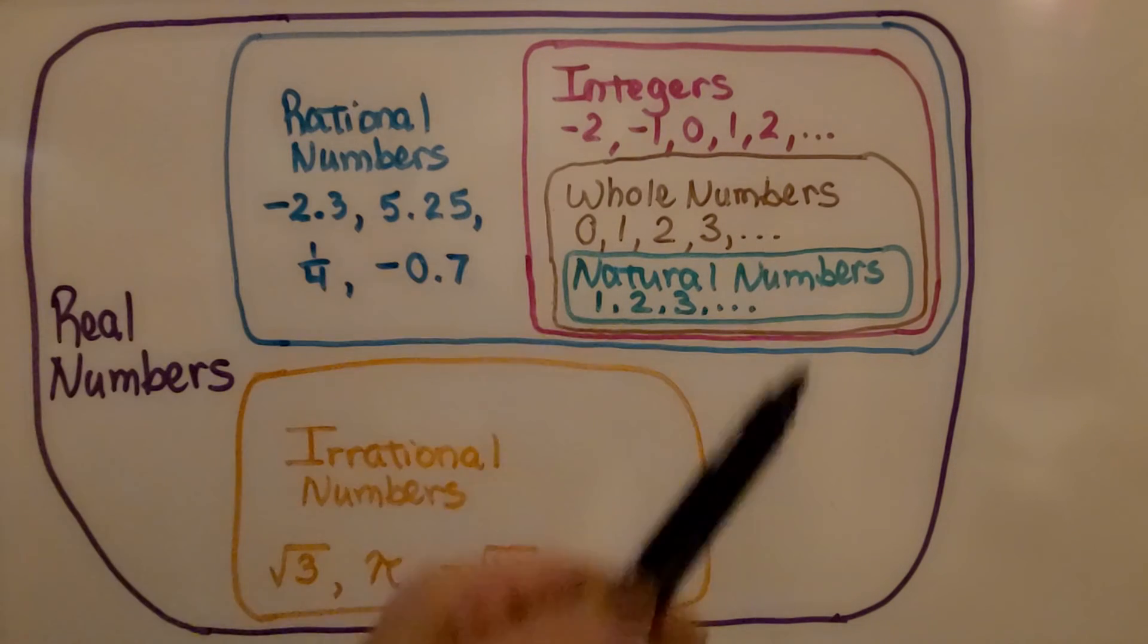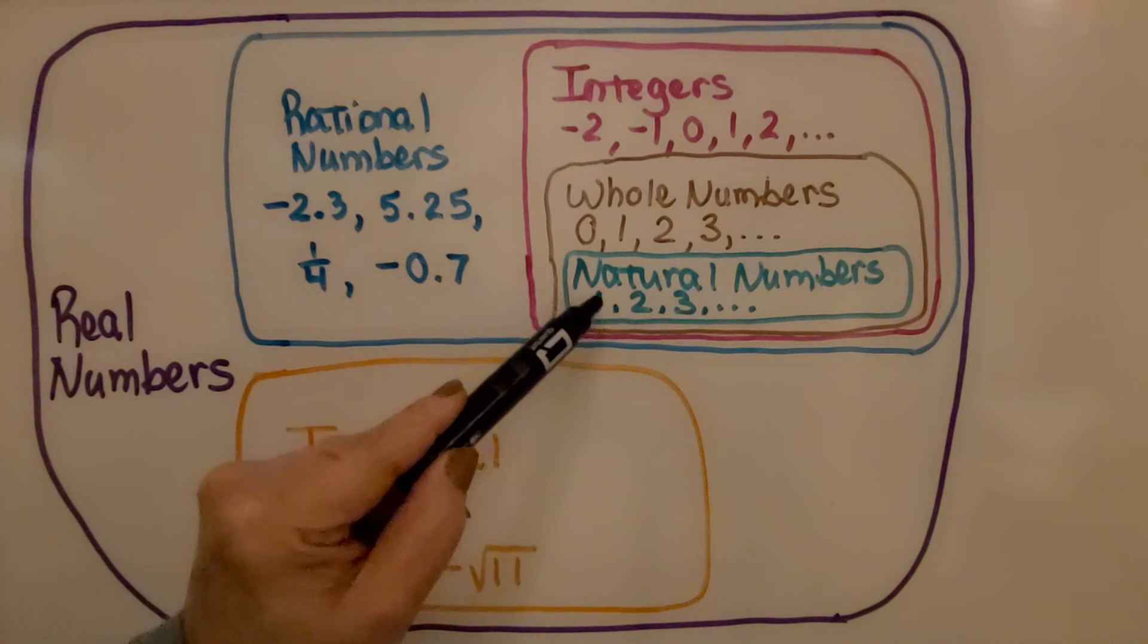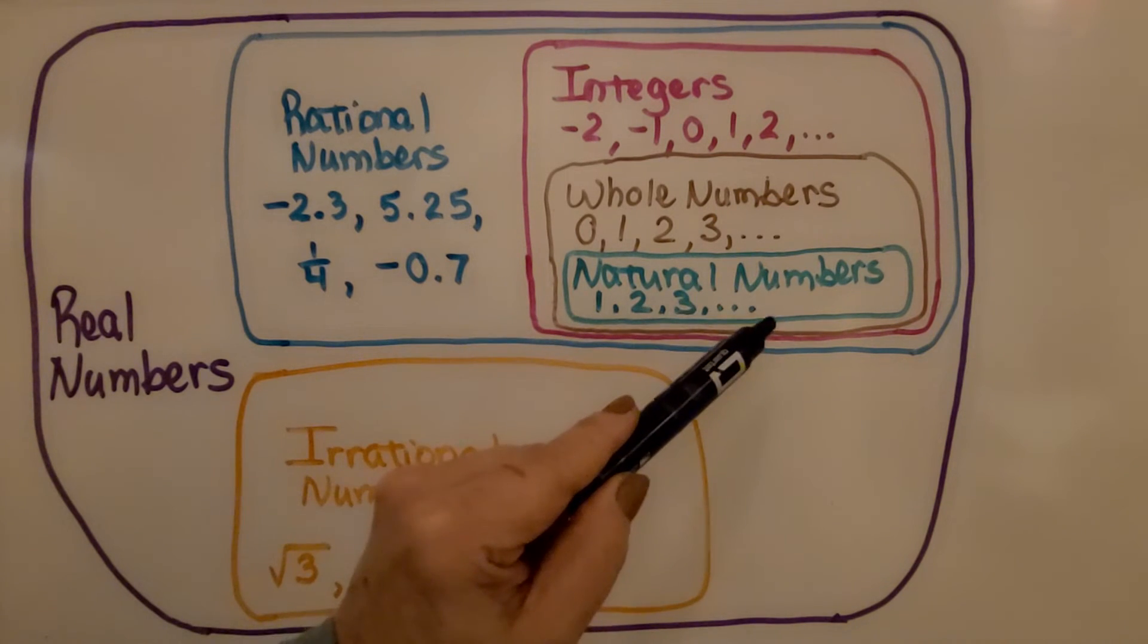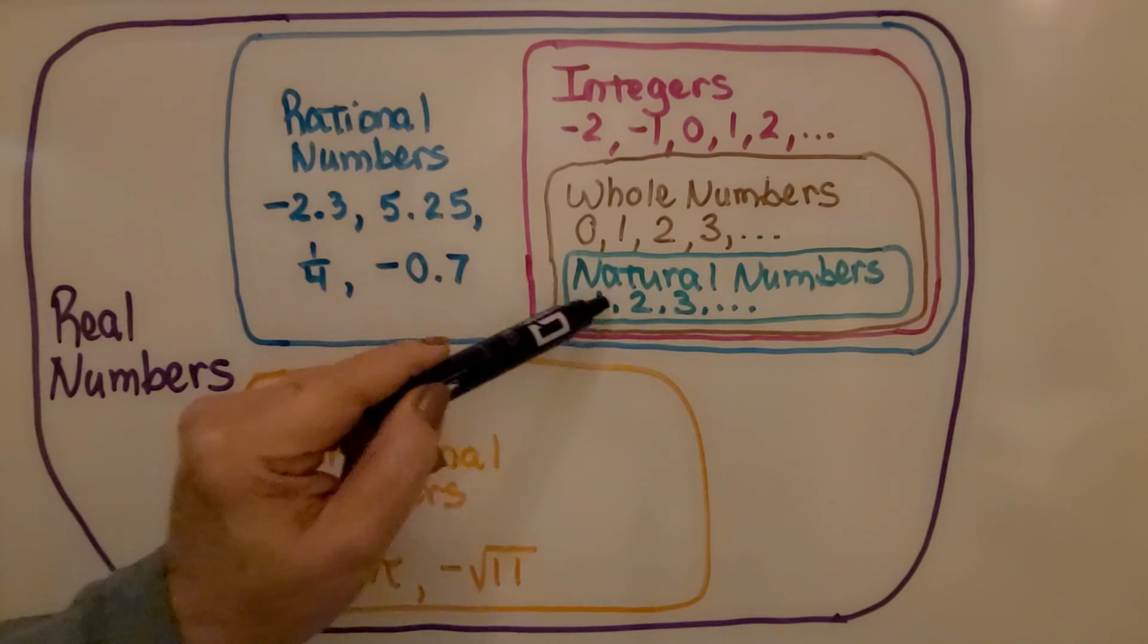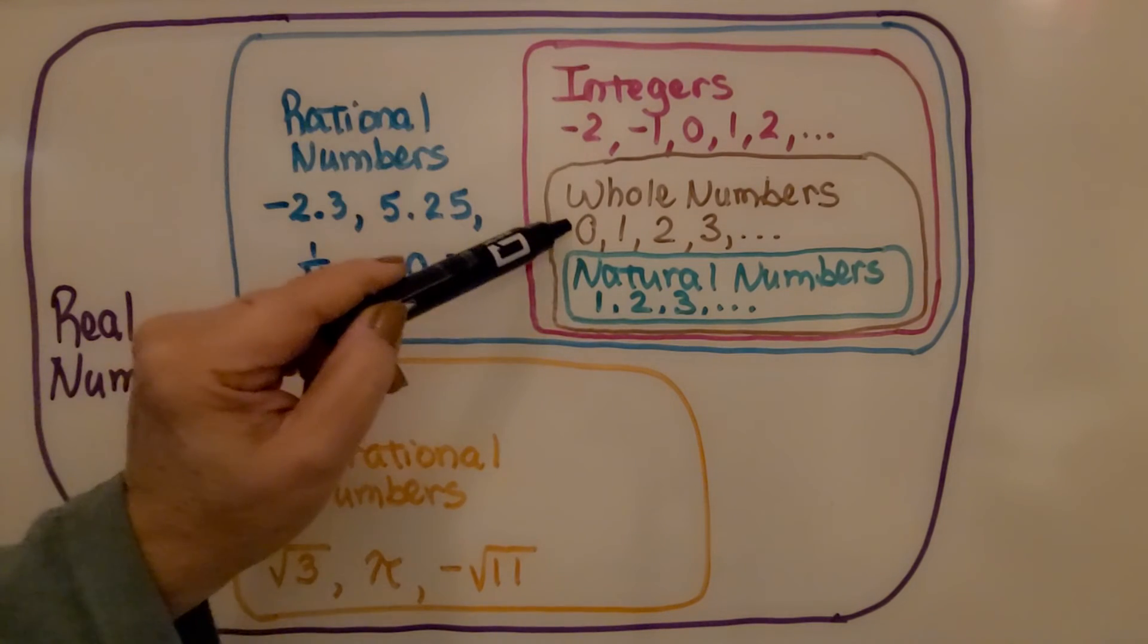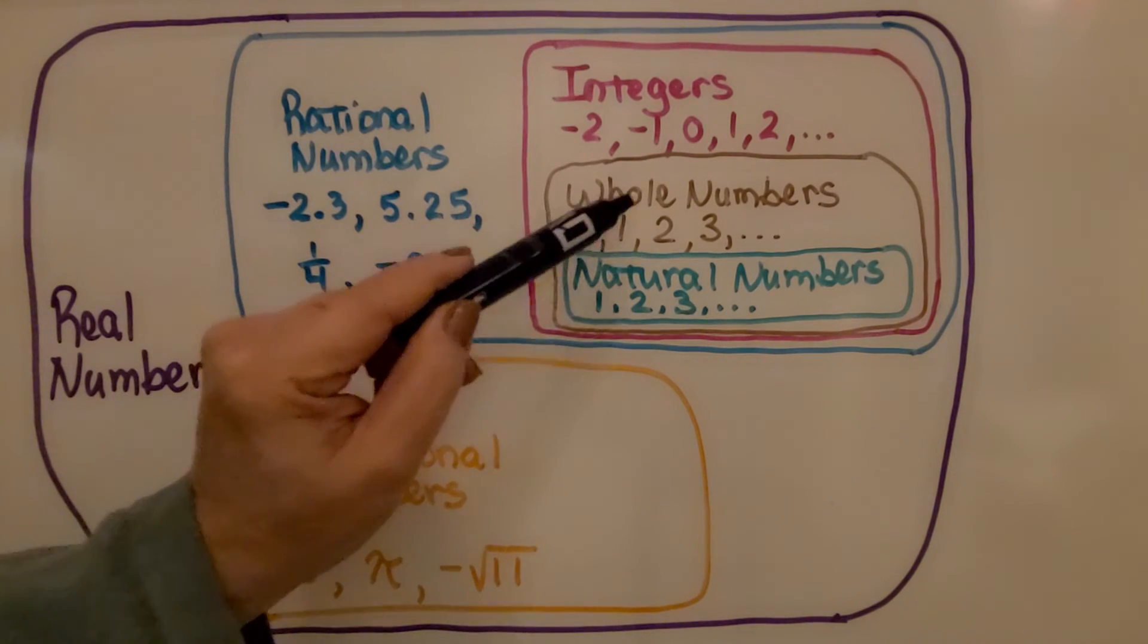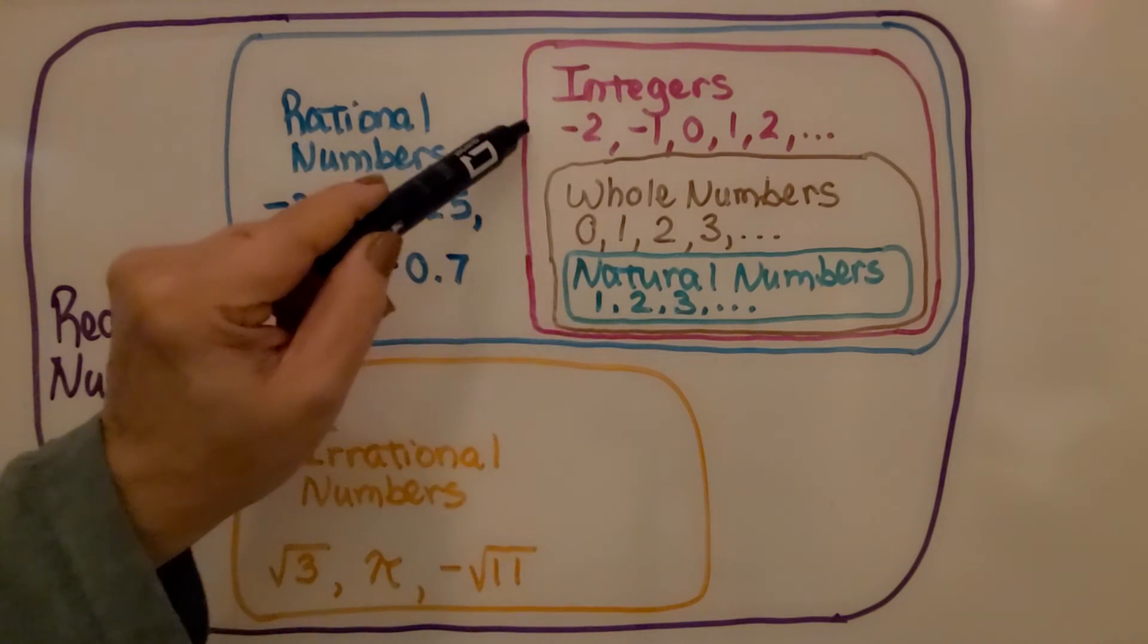So if you look at this diagram, we've got our natural numbers, that are our counting numbers, one, two, three, and so on. We've got whole numbers, which are the natural numbers, including zero. So now we've got all of these numbers plus zero. Then we've got the integers. So we've got zero, one, two, three, and so on, but now we've got it going on the other side of zero into the negatives.